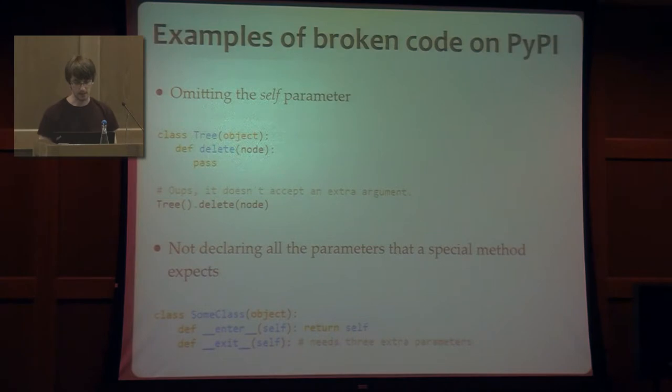For instance, I'd like to show this example that I actually found on PyPI where basically the author of the code wrote a tree class which had a delete method except the fact that the delete method didn't have a self parameter defined. So basically that node from the method is self. And when it tried to run that code, it crashed because the delete doesn't accept an extra parameter. And this was released. This was fixed by the author.